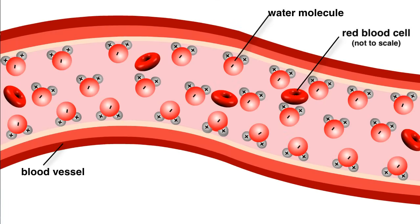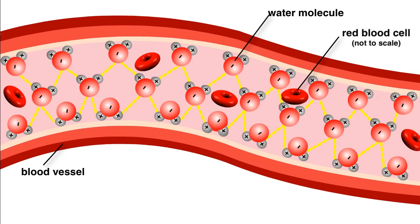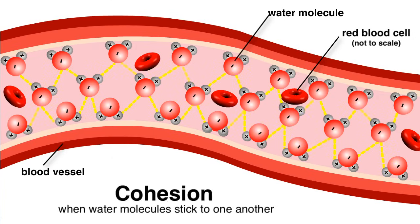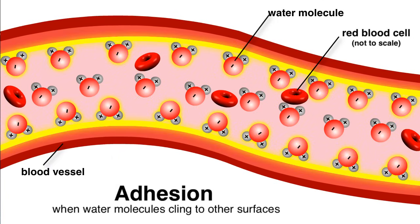Water molecules are also cohesive and adhesive. The hydrogen bonds in water are causing water molecules to stick together, a property known as cohesion. Polar bonds also give molecules an adhesive property, or the ability to cling to other polar surfaces.